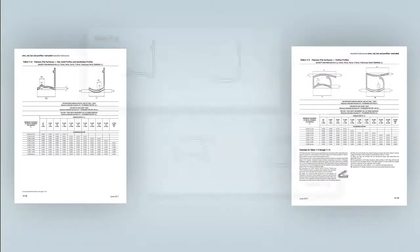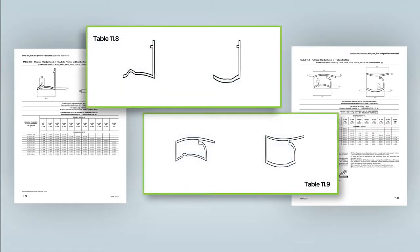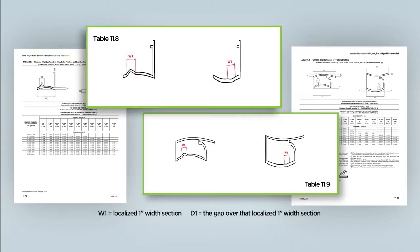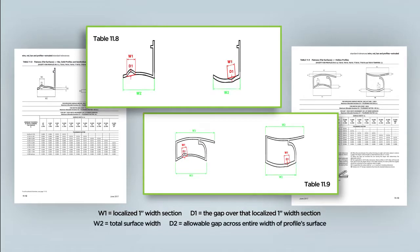The drawings found at the top of Tables 11.8 and 11.9 help illustrate the concept of flatness for solid and hollow profiles. W1 represents a localized one inch width section and D1 is the gap over that one inch section to be compared to the per unit basis tolerance. W2 represents the total surface width and D2 is the allowable gap or total tolerance across the entire width of the profile surface.